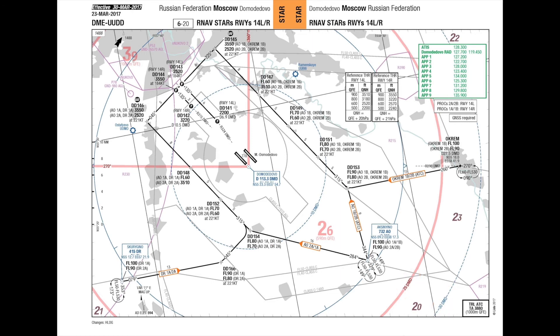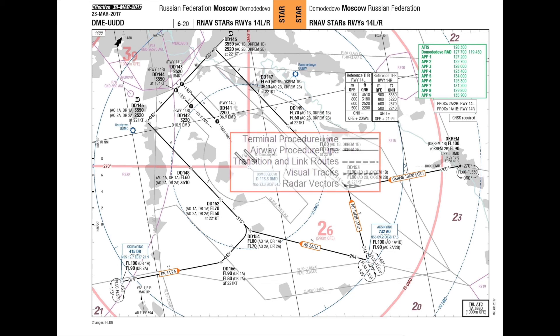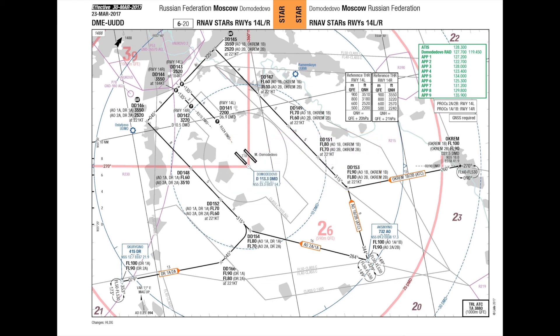Line types illustrate differing procedure lines: terminal procedure line, airway procedure line, transitions and link routes, visual track, and radar vectors. All procedure tracks will be shown as magnetic, unless suffixed with a T to indicate a true track. Headings will be shown with a letter H prefix.